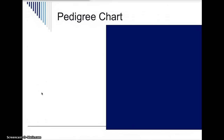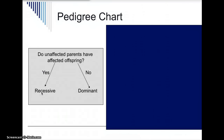In order to figure out whether it's dominant or recessive, the first thing you want to look at is whether unaffected parents have affected offspring — meaning parents that don't have the trait have children who do. If that is the case in a pedigree, then the trait is recessive. If it's not the case, then that trait is dominant.